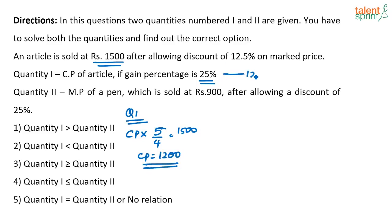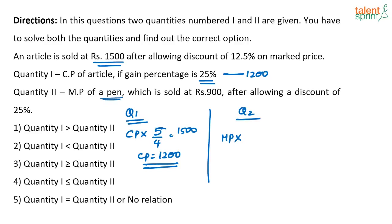Quantity 2: marked price of a pen which is sold at 900 after allowing a discount of 25%. This pen is being sold for 75% of its marked price — that is, three-fourths of the marked price — and this is equal to 900.